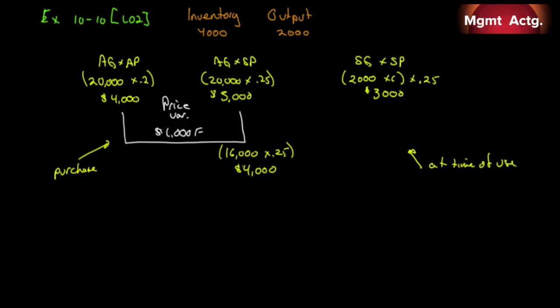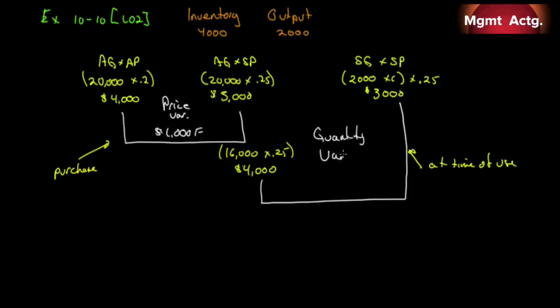Our output was 2,000 units, so we should have used 12,000 milliliters at $0.25 for $3,000. We actually used 16,000 milliliters to create that output. The quantity variance is $1,000 unfavorable. That completes exercise 10-10.